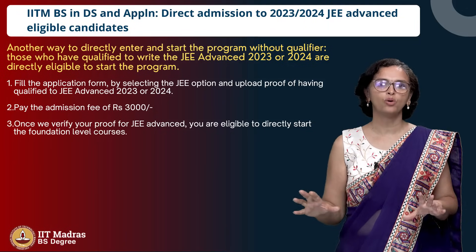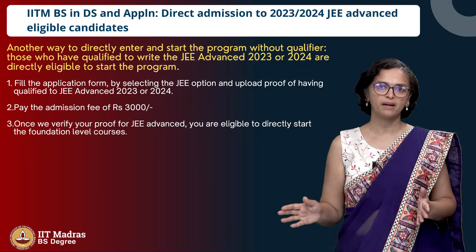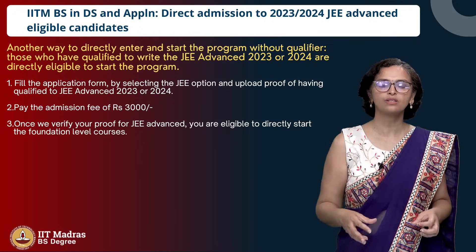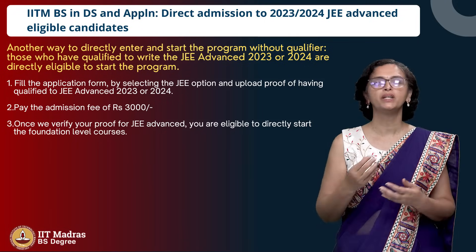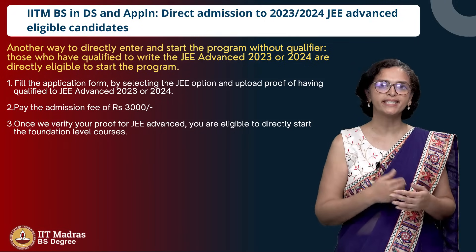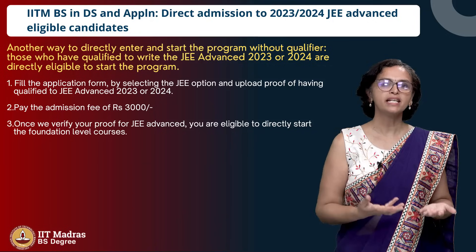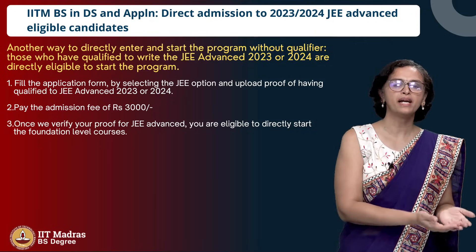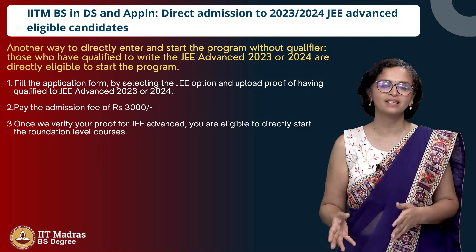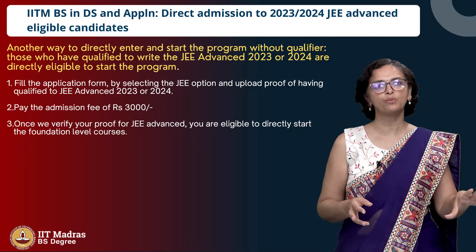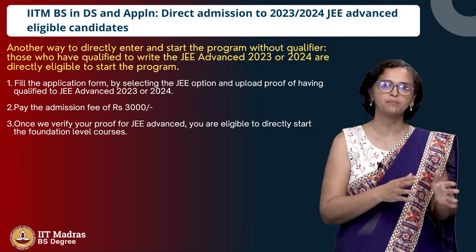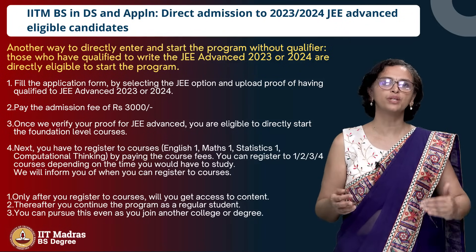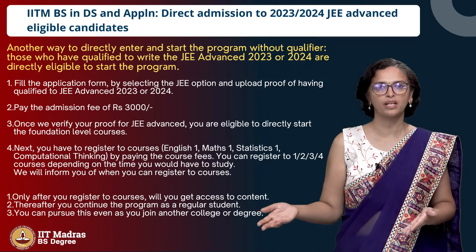The process only admits you to the program — it does not give you access to the content. If you want access to the content and to start the program, you have to register for the courses. Many students who come through the JEE category assume that having paid the 3000 rupees they will get access to the content. The 3000 rupees is only an admission fee; you are admitted to the program, but you still have to register for courses to start.